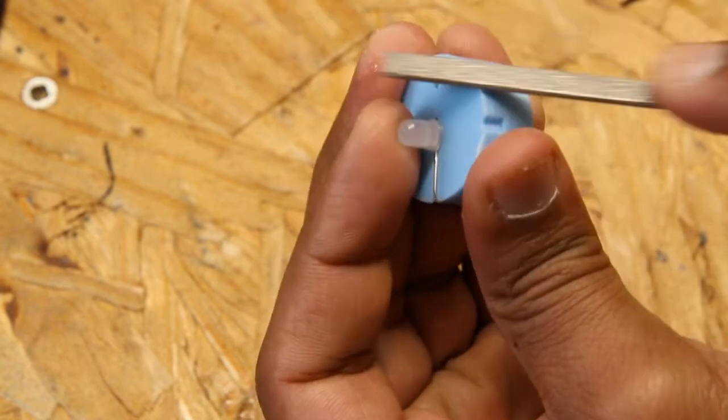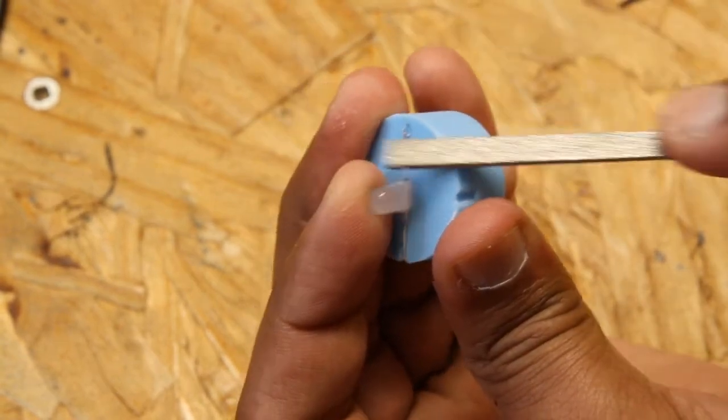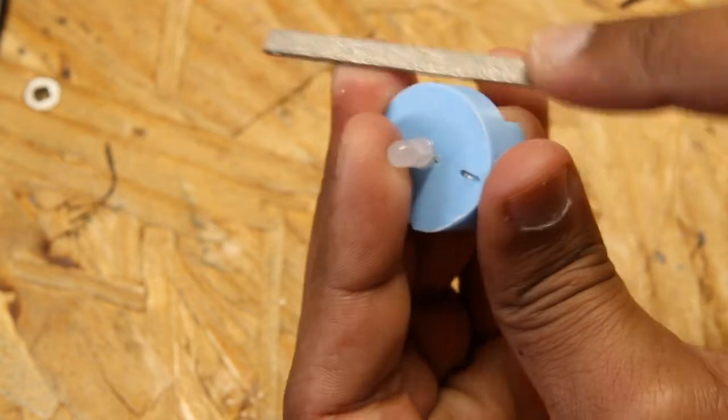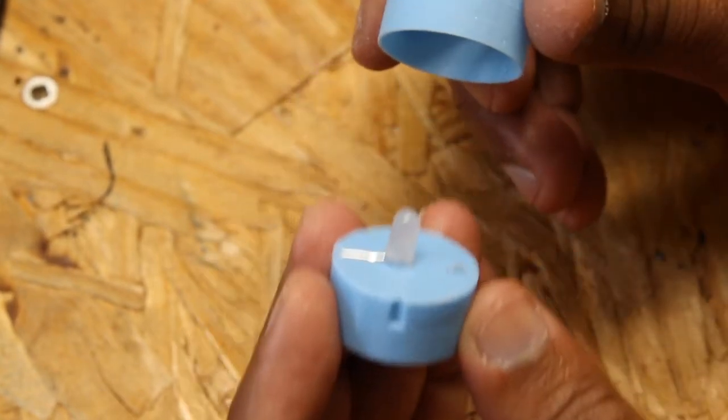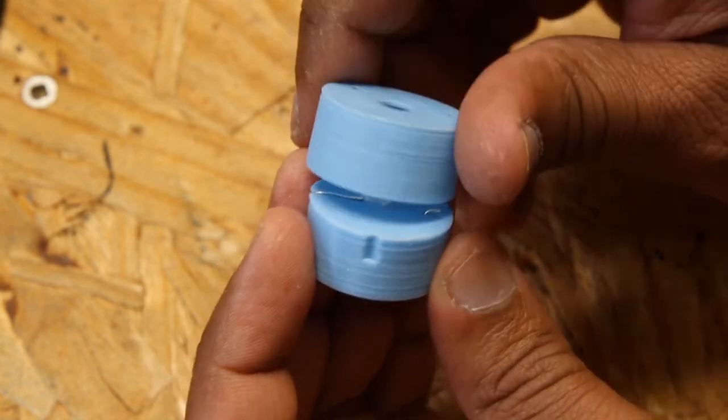Now when we print this, the bottom part that lays on the bed usually has a little brim around it, so what I'm doing here is just taking a file and just filing that off because this is going to be a pretty tight fit once we get that cover on.